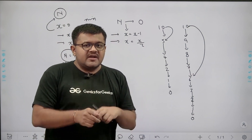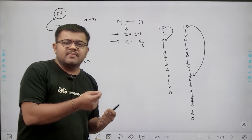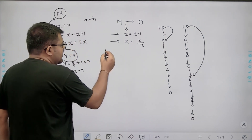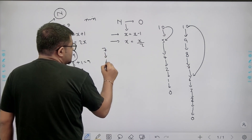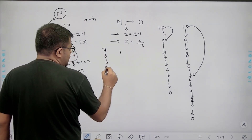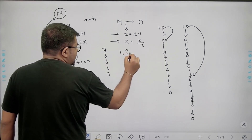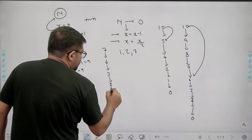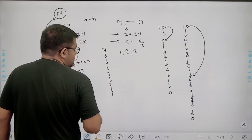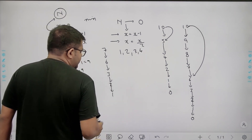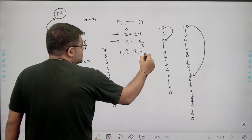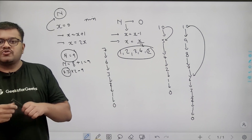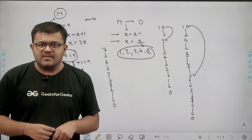So: while N > 0, if N is even divide by 2 and increment the count; if N is odd subtract 1 and increment the count. For example with N=7: 7 is odd → subtract 1 (ops=1); 6 is even → divide by 2 gives 3 (ops=2); 3 is odd → subtract 1 gives 2 (ops=3); 2 is even → divide by 2 gives 1 (ops=4); 1 is odd → subtract 1 gives 0 (ops=5). Answer is 5.